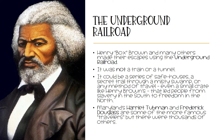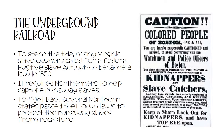Henry Box Brown and many others made their escapes using the Underground Railroad. This was not a train or a tunnel. It could be a series of safe houses, a secret trail through a misty swamp, or any method of travel — even a small crate like Henry Brown's — that led people from slavery in the South to freedom in the North. To stem the tide of escaping slaves, many Virginia slave owners called for a federal Fugitive Slave Act, which became law in 1850. It required northerners to help capture runaway slaves. Several northern states passed their own laws to protect the runaway slaves from recapture.